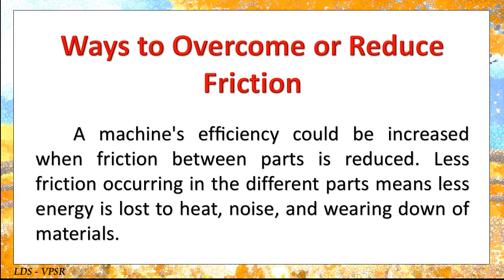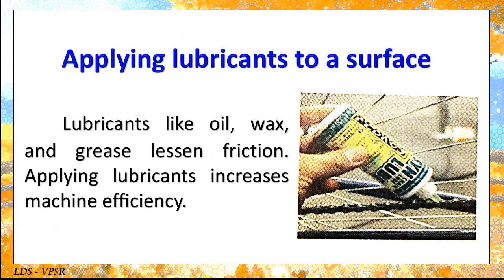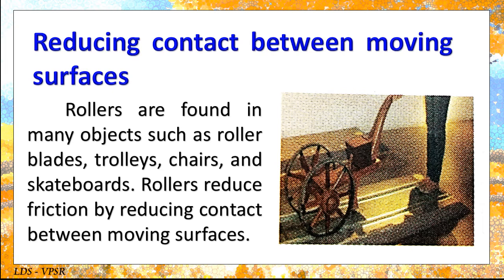Ways to overcome or reduce friction: a machine's efficiency could be increased when friction between parts is reduced. Less friction means less energy is lost to heat, noise, and wearing down of materials. Applying lubricants to a surface — lubricants like oil, wax, and grease lessen friction and increase machine efficiency. Reducing contact between moving surfaces: rollers are found in many objects such as rollerblades, trolleys, chairs, and skateboards. Rollers reduce friction by reducing contact between moving surfaces.